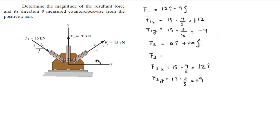It's the same vector as this, just different directions. So 12i plus 9j. This is F3, this is F2, this is F1.